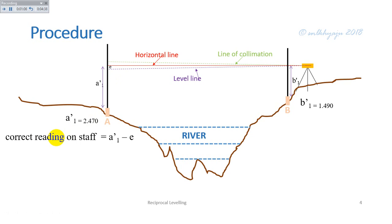Therefore, correct reading on staff A equals a1 dash minus e. The true difference of level between A and B is calculated as h equals a1 dash minus b1 dash minus e. In this way, we can determine the true height difference between A and B.